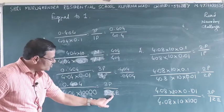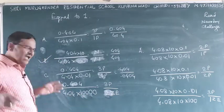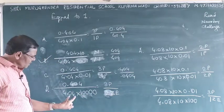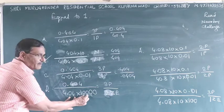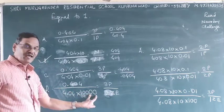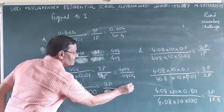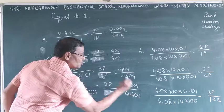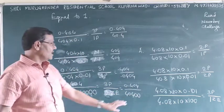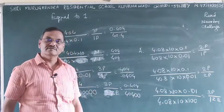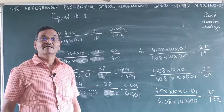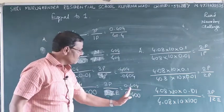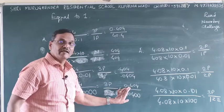Two places and this remains. Whereas here in front, two zeros will come, then the value will be how much? The value will be 0.000 like this.